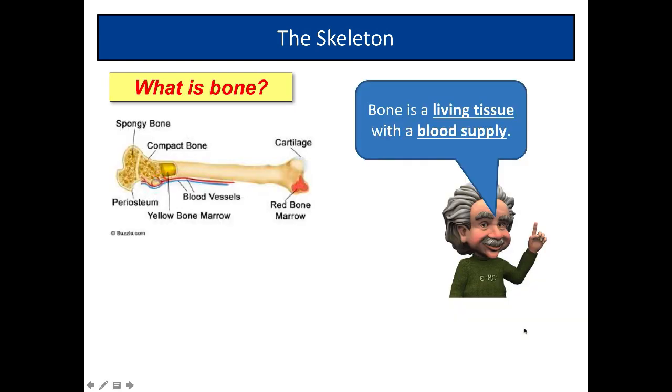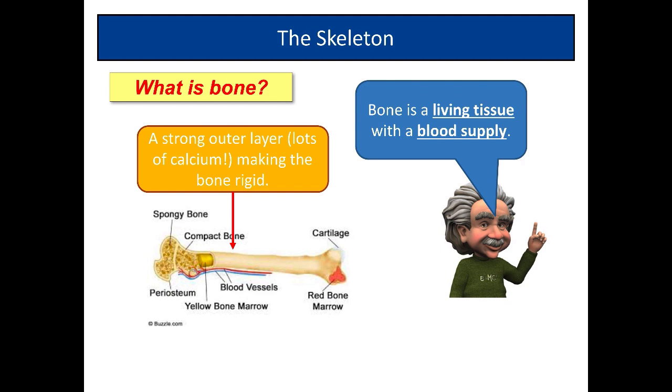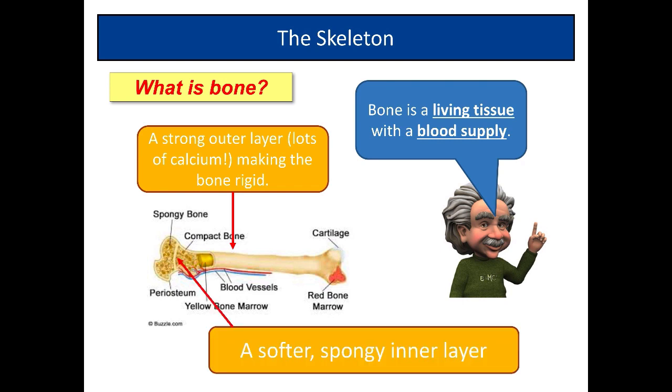Let's look at the bone itself. The bone has its own blood supply. You can see here we've got blood vessels that are providing nutrients in the bone and taking away waste materials. So bone is living, it's a living tissue with its own blood supply, and there's two parts to it. There's the strong outer layer. If you drink lots of milk, you'd do well because it builds up the bones. You've got a strong outer layer with lots of calcium that makes the bone strong and rigid. But you've also got a softer spongy inner layer, and we'll look at the importance of this a little bit later on.